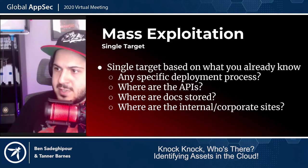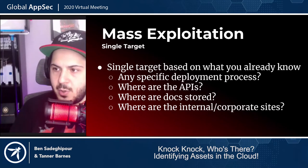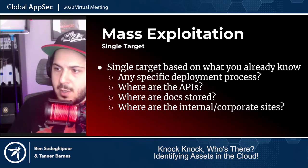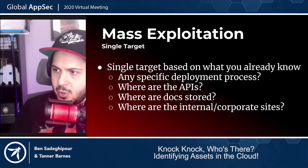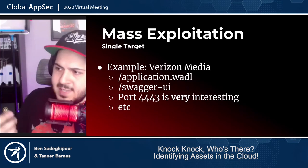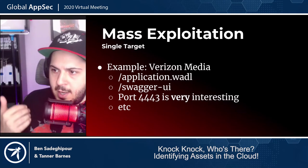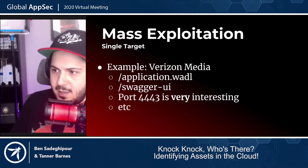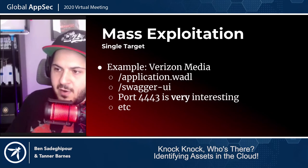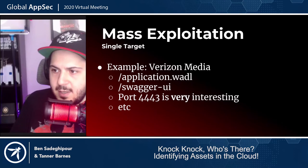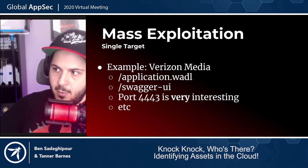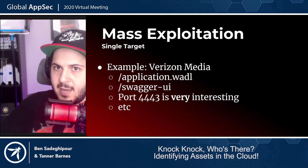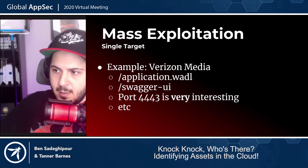For a single target, you have to be based on what you already know — how do they name the APIs, where do they store it, where are the docs stored, where are the internal corporate sites. If you're familiar with the Verizon Media Bug Bounty and have watched my streams, they're notoriously well known for leaving API documentation behind and having port 4443 with some really juicy APIs. We knew all this data and had to figure out a way to access them across every single Yahoo.com or Verizon Media domain.